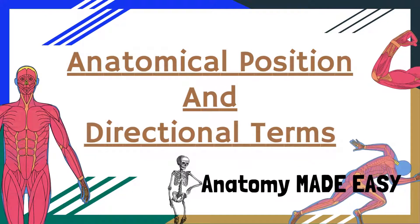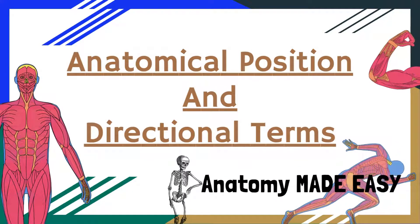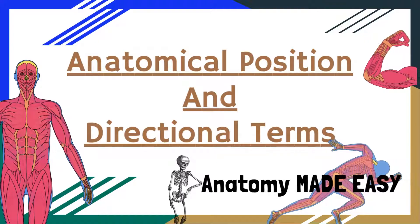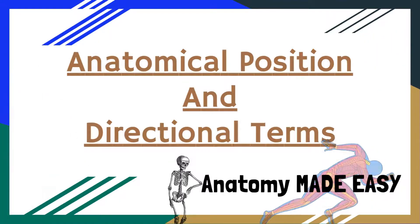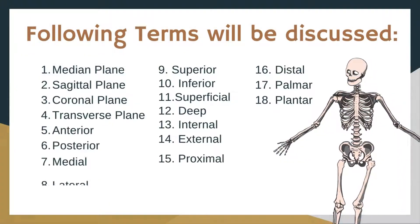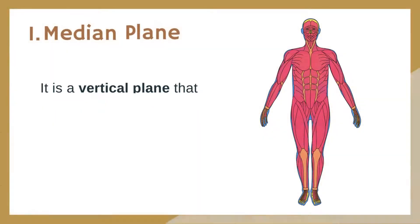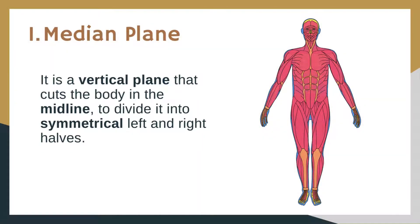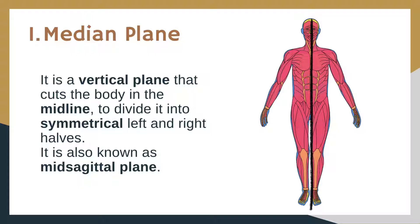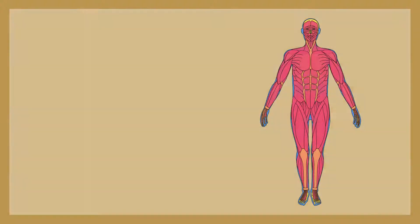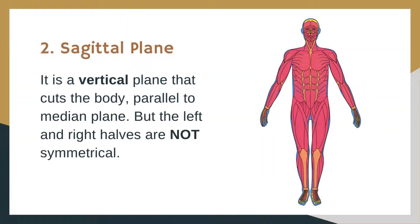In this video we will talk about anatomical position and directional terms. The following 18 terms will be discussed. Number 1: median plane — it is a vertical plane that cuts the body in the midline to divide it into symmetrical left and right halves. It is also known as the mid-sagittal plane.